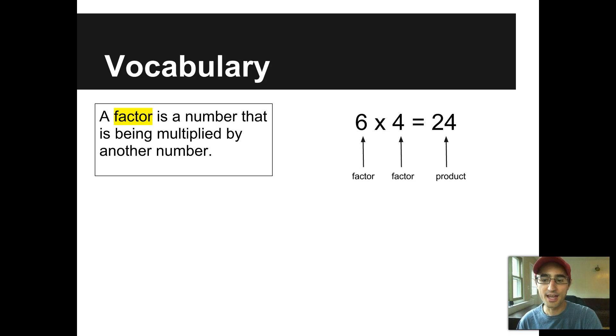The six and four are factors. 24 is the answer. We call that a product. So a factor is just the number that's being multiplied. No big deal. Got that? Sweet.